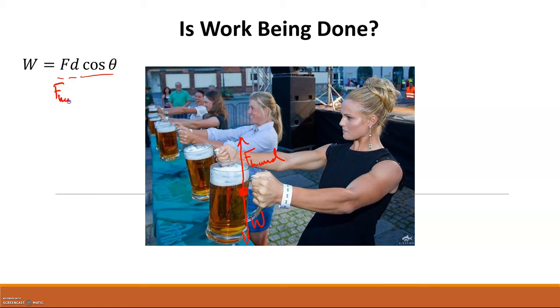So are we doing work with the force of our hand? F hand. What is the displacement of the mug? Well, it's not moving anywhere, so the displacement must be zero. Cosine of the angle between them doesn't matter because this whole thing is zero. So for an object that's just being held stationary, not moving up or down, the work done is zero.